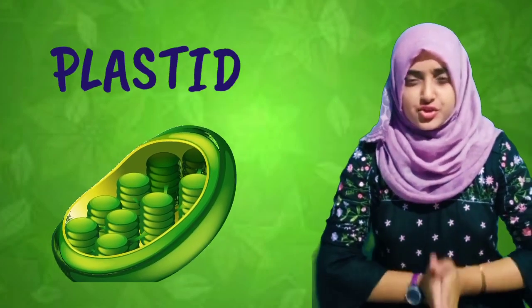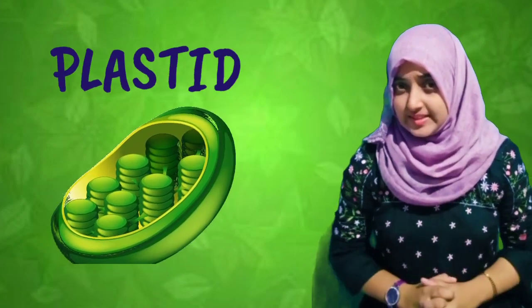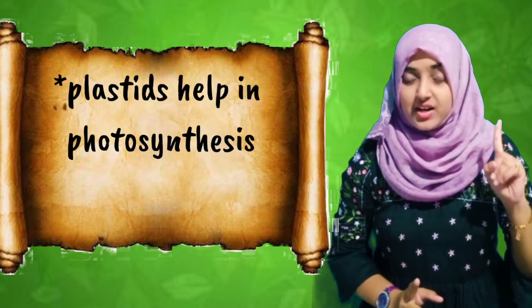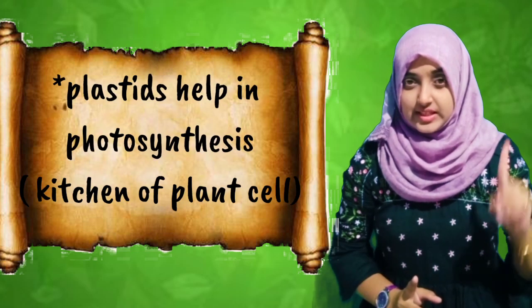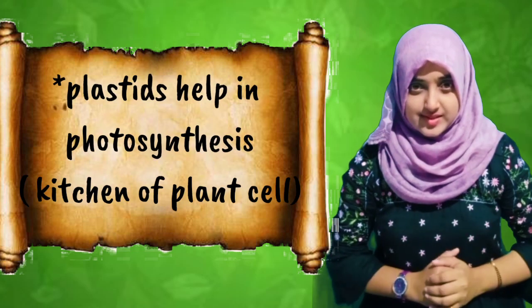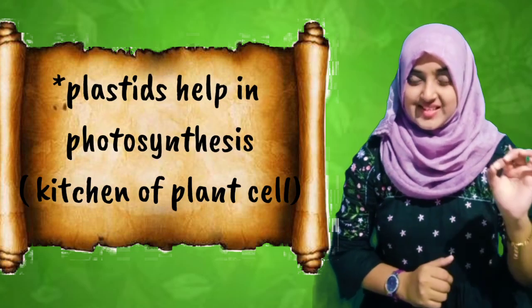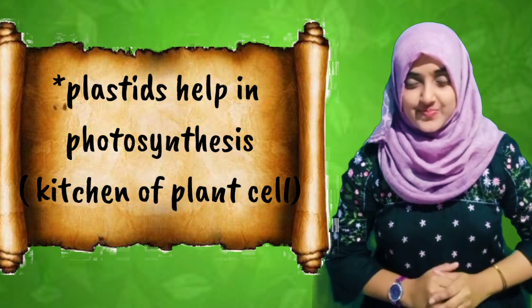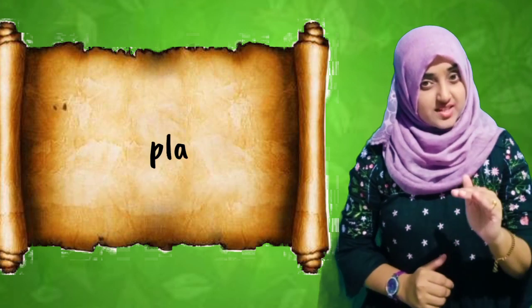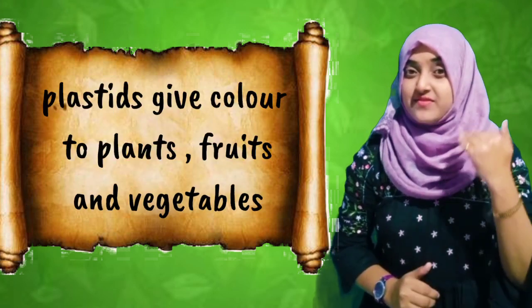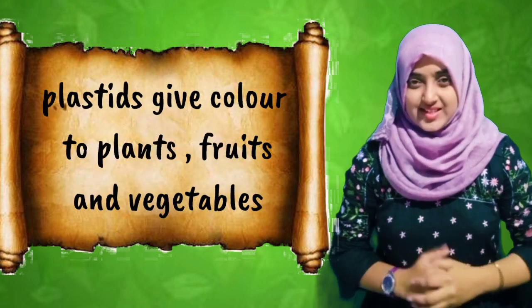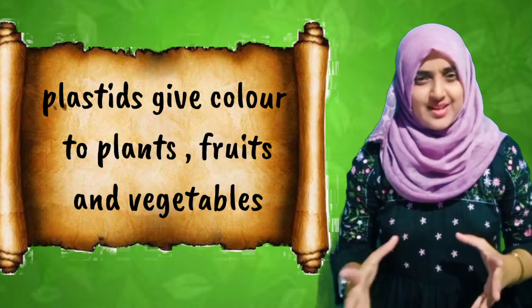To summarize: plastids are involved in photosynthesis and hence are regarded as the kitchen of the plant cells. Plastids also give color to plants, fruits, and vegetables.